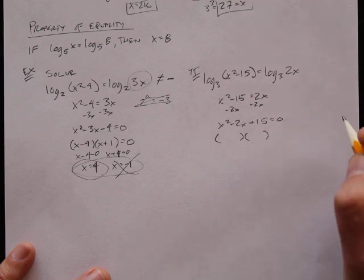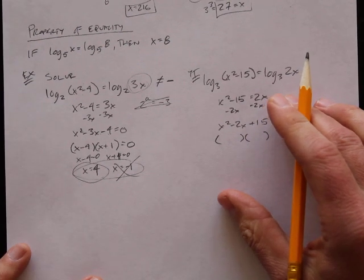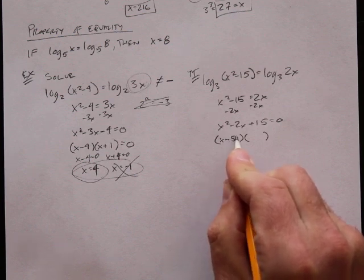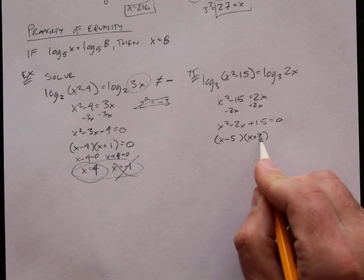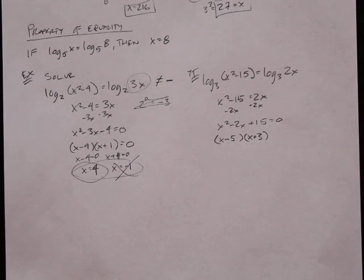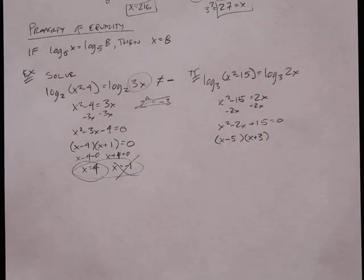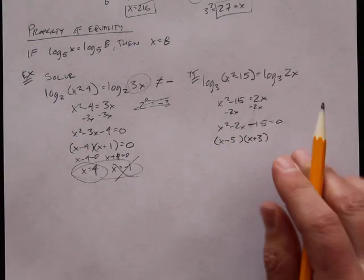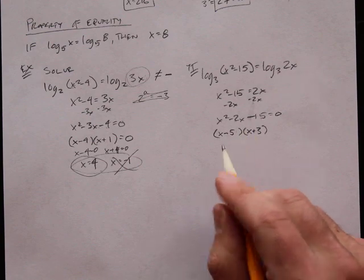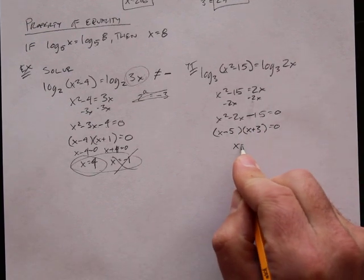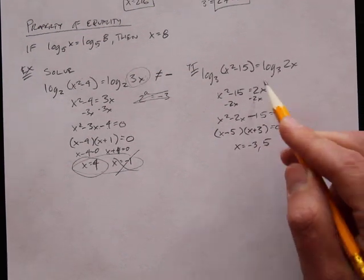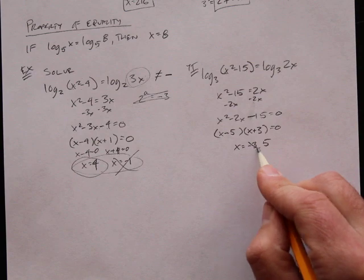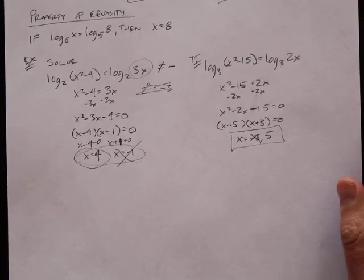What do I multiply together to get negative 15 and add together to get negative 2? x minus 5 times x plus 3 gives a negative 15 and adds to negative 2. Setting each equal to 0, I get x equals negative 3 and x equals positive 5. Plugging back in: 5 gives 10 on each side — that looks good. Negative 3 gives negative 6 — that won't work. So x equals 5 is the only solution.